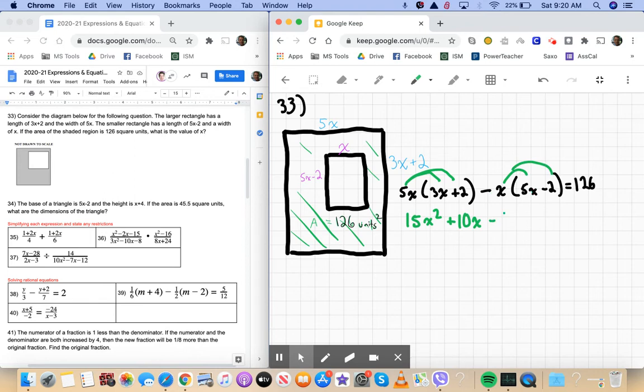minus 5x squared, and then plus 2x equals 126.